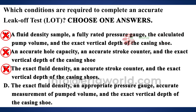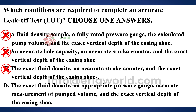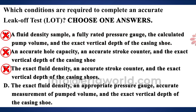Option D includes 'exact fluid density' — correct. It also includes 'appropriate gauge': if the anticipated maximum surface pressure is between 1,000 and 2,000 psi, use a 5,000 psi gauge; if less than 500, use a 1,000 psi gauge. Taking a 10,000 psi gauge when pressures are only 100–700 psi means you can't read the numbers properly. Finally, 'accurate measurement of volume pumped' — you check pits to verify actual volume. Unlike a stroke counter, pit measurement gives accurate volume, so option C is wrong.